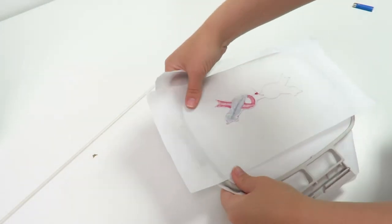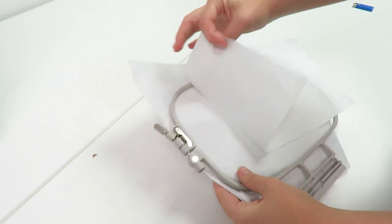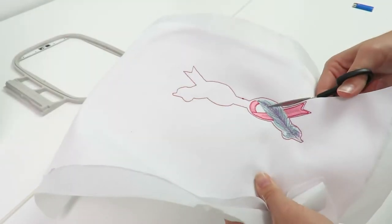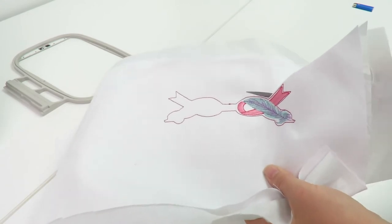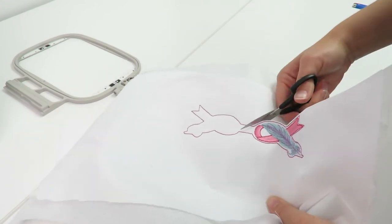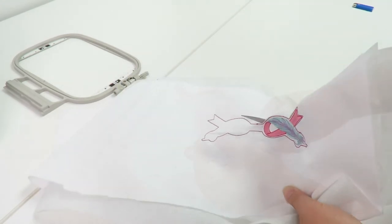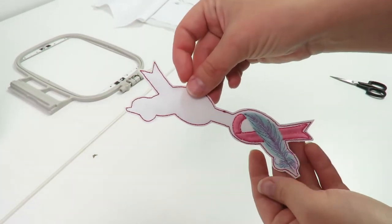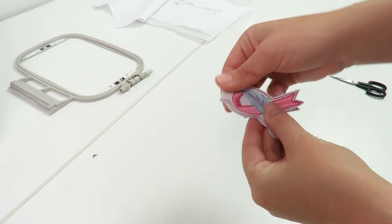Remove the embroidery frame from the machine and remove the stitch and tee from the frame. Use a small sharp scissor to cut around the embroidery outline. You can either cut on the embroidery line or cut just on the outside of the embroidery line.